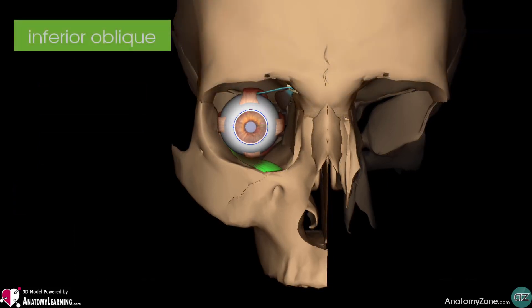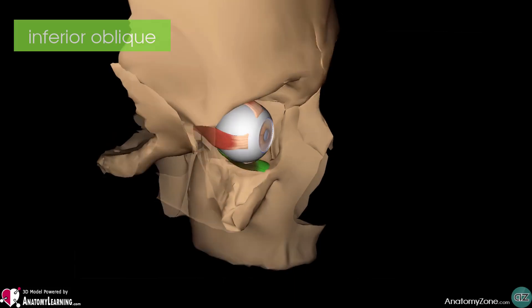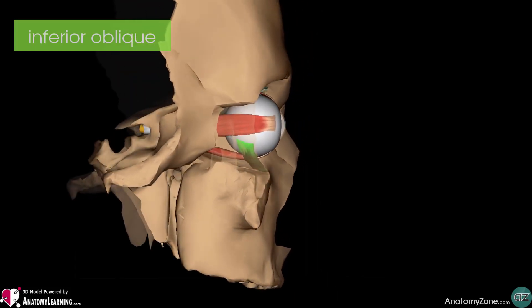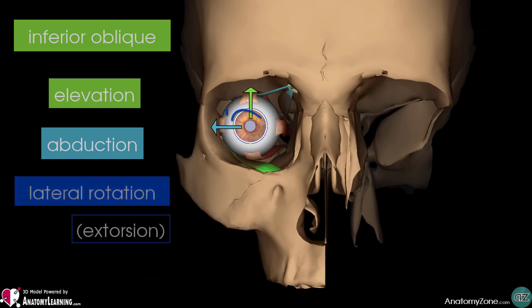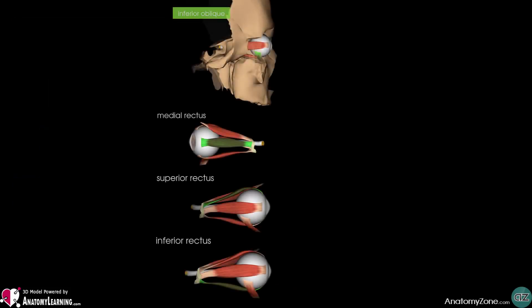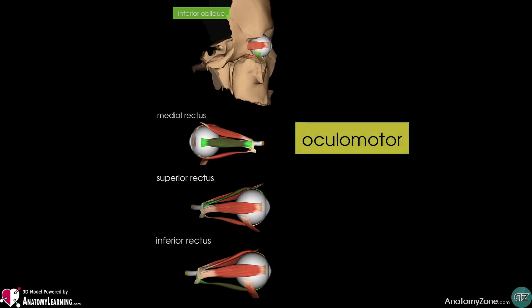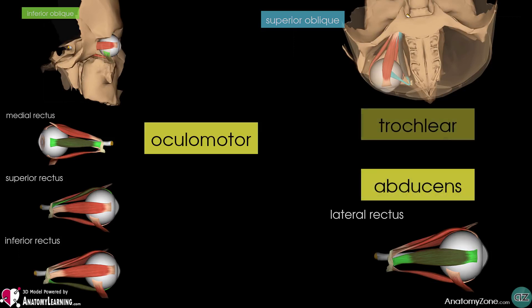The inferior oblique muscle originates from the medial side of the orbital floor. It attaches to the sclera of the eye, posterior to the lateral rectus muscle. Its action is to elevate, abduct, and laterally rotate the eyeball. It is innervated by the third cranial nerve, the oculomotor nerve. So all the extraocular muscles are innervated by the oculomotor nerve, except for the lateral rectus and the superior oblique, which are innervated by the abducens nerve and the trochlear nerve respectively.